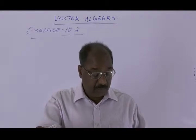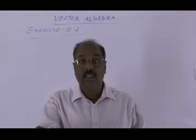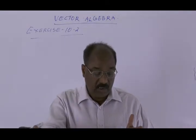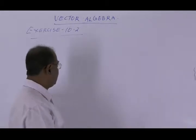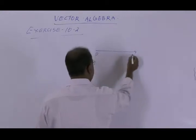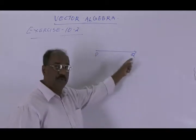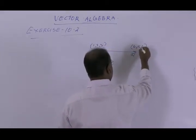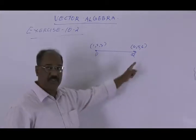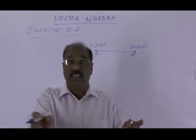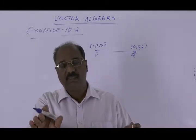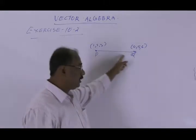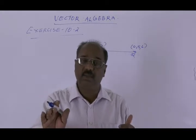The first one is: find the unit vector in the direction of the vector PQ, where P and Q are the points (1, 2, 3) and (4, 5, 6). To find the unit vector in the direction of a given vector, we need only divide the given vector by its modulus — its magnitude. So, find the vector PQ and divide PQ by its magnitude; we will get the unit vector in the direction of PQ.